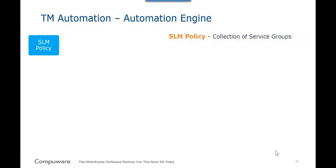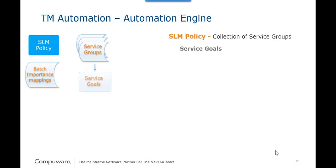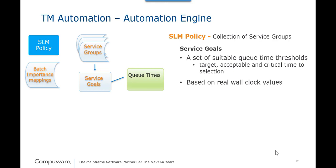To recap, analysis associates a job to a service group contained in the SLM policy. Each service group contains service goals, constraints, and an importance indicator for a collection of like jobs. Service goals represent the business commitment to provide a defined service to a job — the job must start within a specific time after it enters the system. The service goals define a set of suitable queue time thresholds based on wall clock, including target time, acceptable time, and critical time to selection. The service goals also contain potential constraints, like a limit of jobs per LPAR that can run at one time.